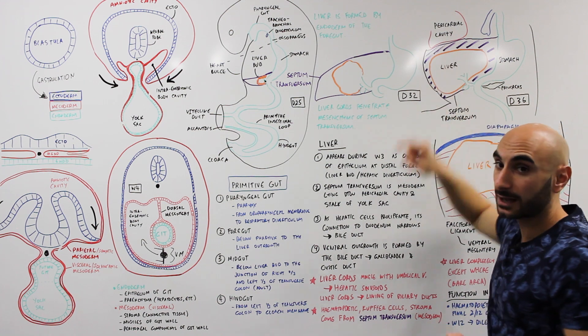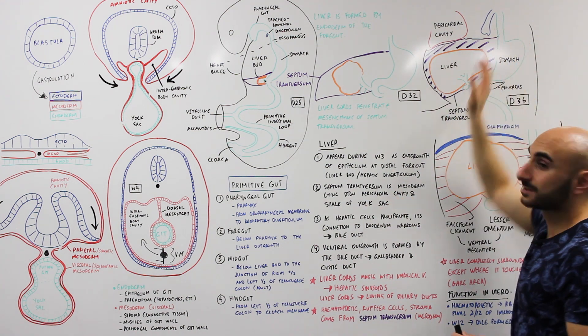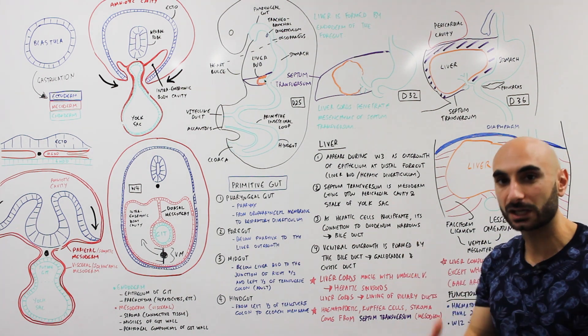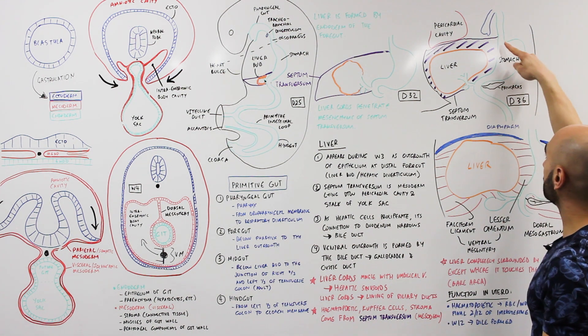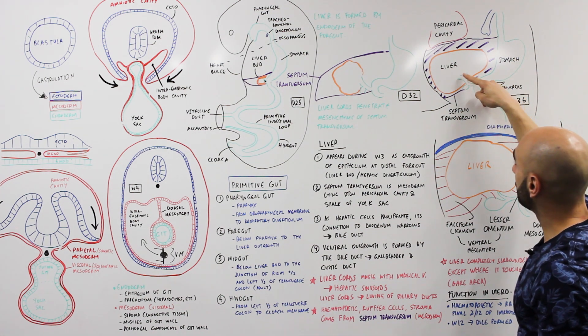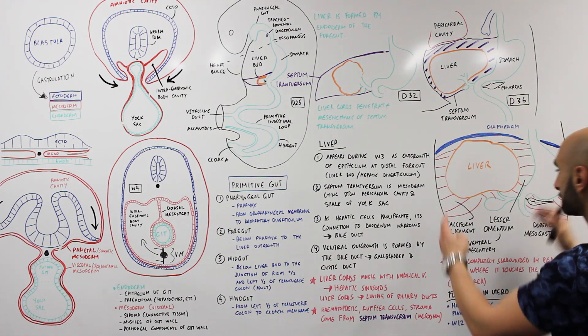Above it is the pericardial cavity. In blue is the respiratory diverticulum where the lungs and the trachea are developed, and in orange and green we have the GIT and the biliary system.